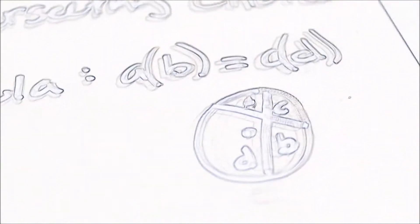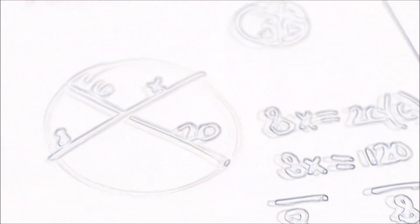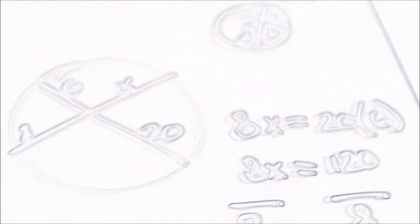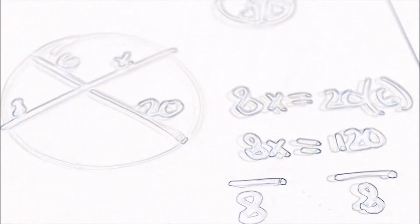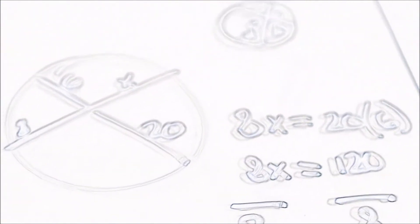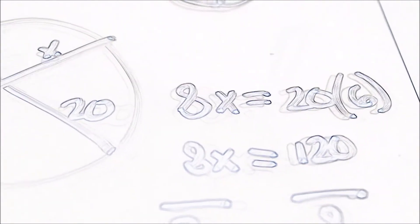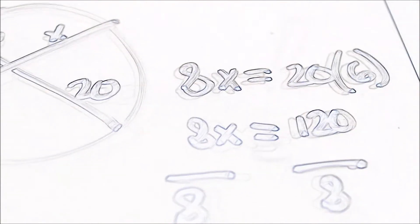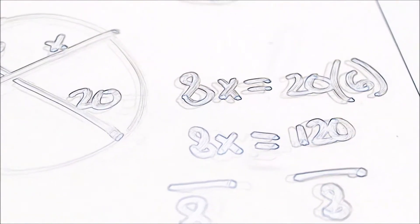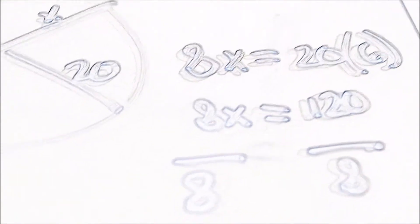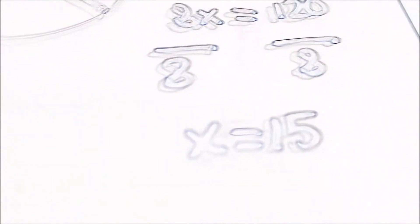There's an example. Here's another example. So you put the 8 and X together equals 20 times 6. Then you drop it down to 8X equals 120 because you times the 20 and 6. Then you divide it by 8. So 8 into 120 will equal 15. And there's your answer.